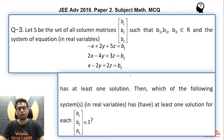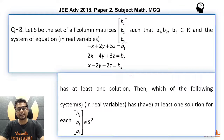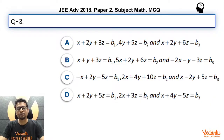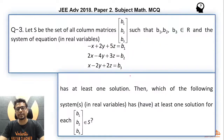Let S be the set of all column matrices [b1, b2, b3] such that b1, b2, b3 are all real numbers, and the system of equations in real variables: minus x plus 2y plus 5z equal to b1, 2x minus 4y plus 3z equal to b2, x minus 2y plus 2z equal to b3, has at least one solution. Then which of the following systems in real variables has or have at least one solution for each column matrix [b1, b2, b3] belonging to set S? This is a multiple correct type question.